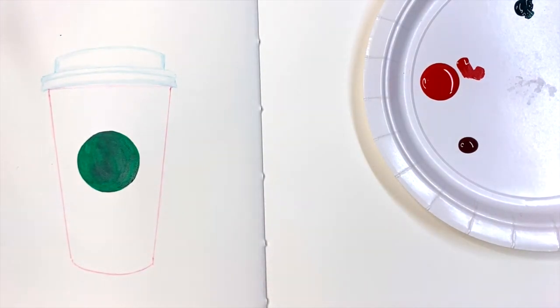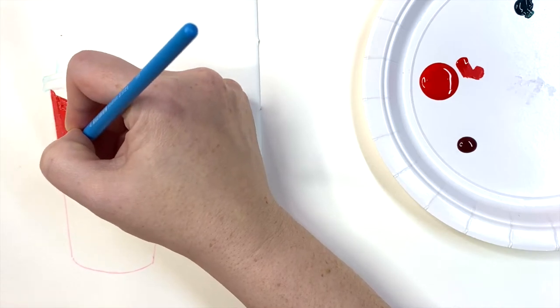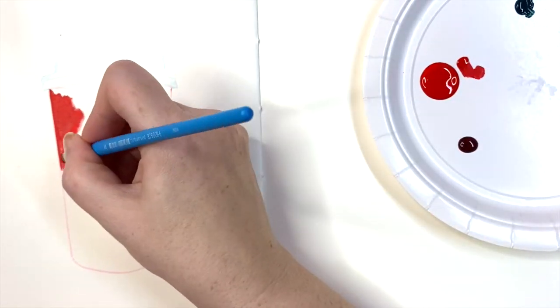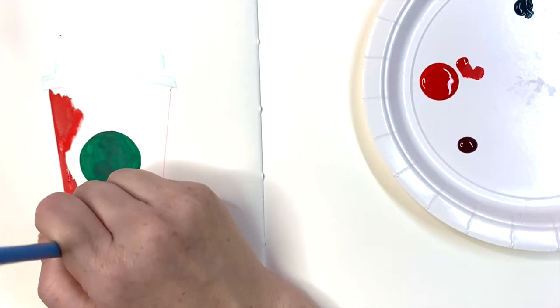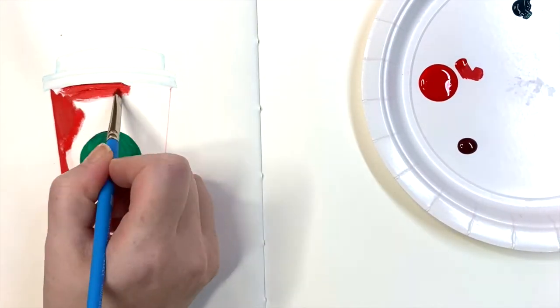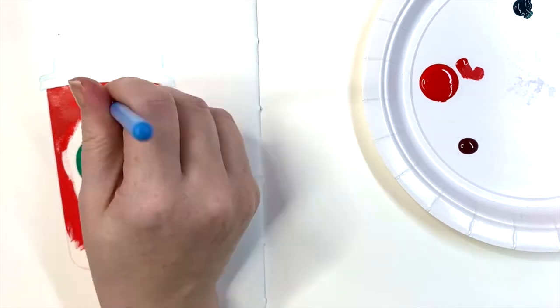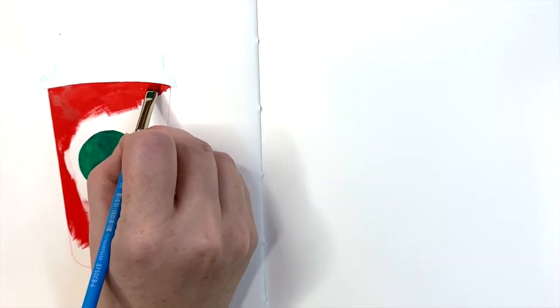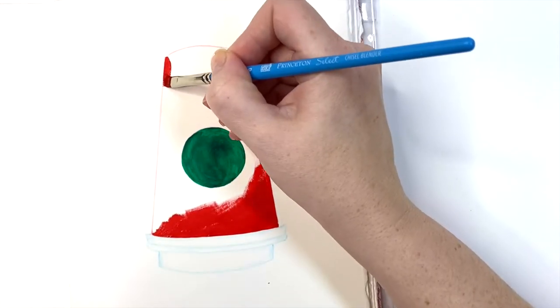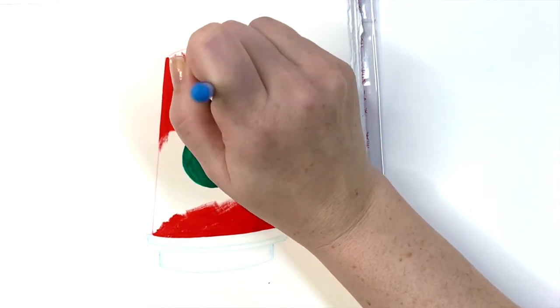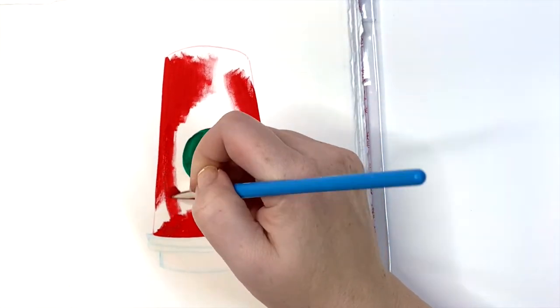For the next part, I'm going to go ahead and grab the red and work my way down. Again, paying close attention, slowly going on those straight edges. This is about where I realize that I find it pretty difficult to paint at this angle, so I turn my paper. Feel free to turn your paper and make it as easy for your hand as possible.